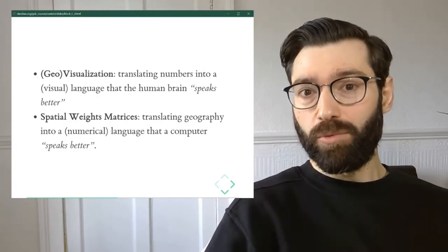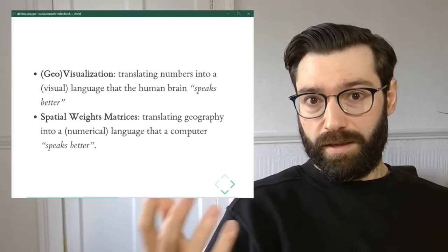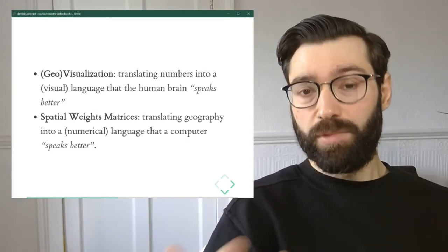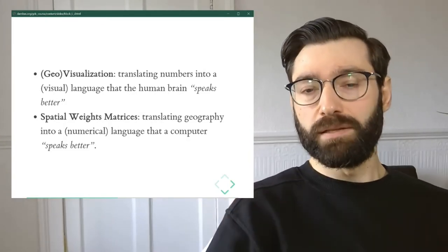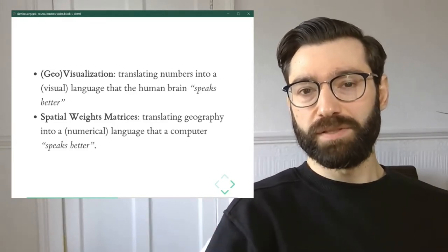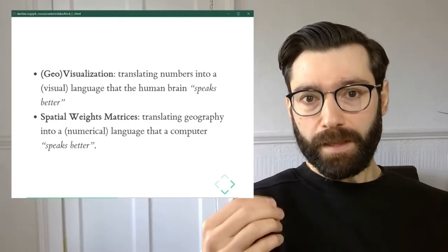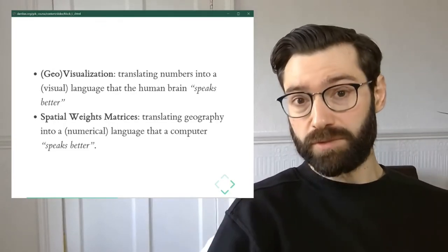In this context, spatial weights matrices do the opposite. They take not necessarily color, but they take geography, they take spatial context, they take all of the richness of geographical relationships and translates them into numbers and into a matrix.